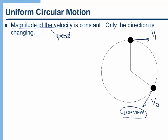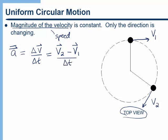If we're trying to figure out what the acceleration is for this motion and we're not careful, we'll get the wrong answer. Acceleration is defined as delta V over delta T — that's the average acceleration. You might be inclined to say the acceleration is zero because V2 and V1 have the same magnitude. However, that would be incorrect, because acceleration and velocity are vectors. Delta V is V2 minus V1 over delta T. Clearly, V2 minus V1 is not zero because those vectors are not in opposite directions. So the acceleration is not zero.